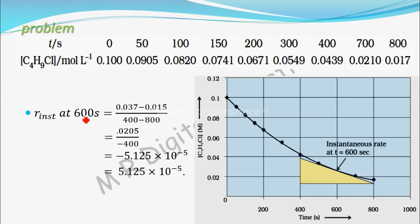So r_inst at 600 seconds equals 0.0205 divided by -400, which equals -5.125 × 10^-5, or 5.125 × 10^-5.